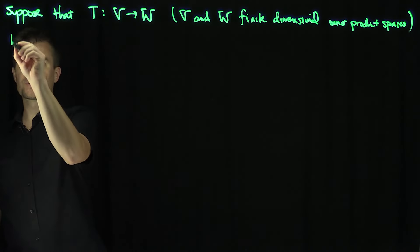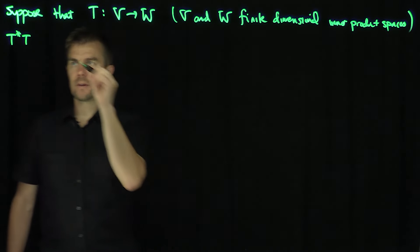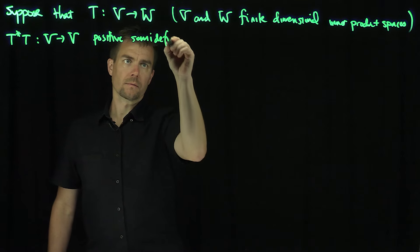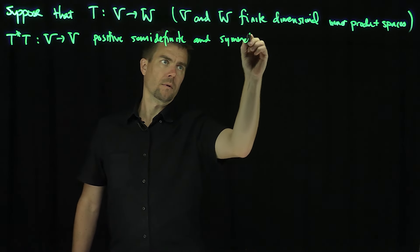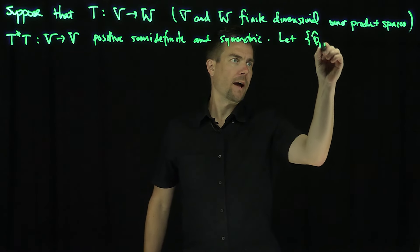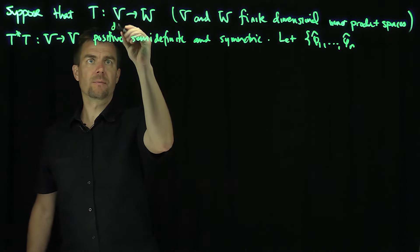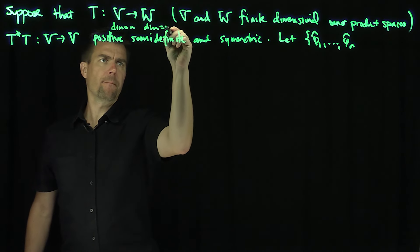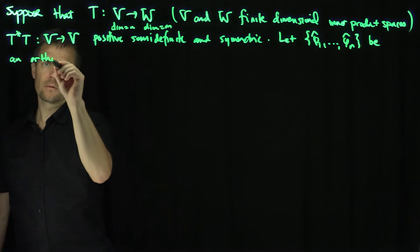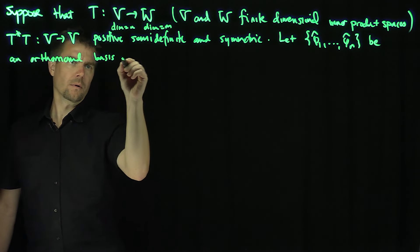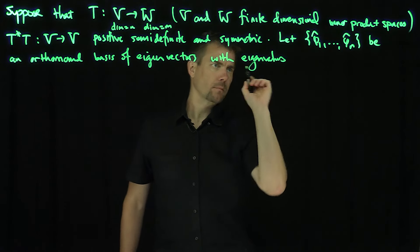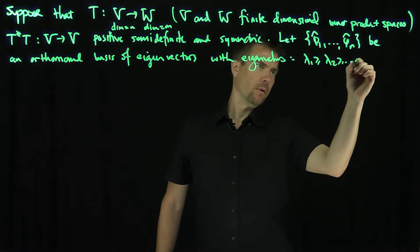We have the singular value decomposition. We consider T*T, the map from V into V, which is positive semi-definite and symmetric. That means I can find an orthonormal basis of eigenvectors for this operator — let's call them phi-1-hat through phi-n-hat — where the dimension of V is n and the dimension of W is m. Let phi-1 through phi-m be an orthonormal basis of eigenvectors with eigenvalues traditionally arranged as lambda-1 ≥ lambda-2 ≥ ... ≥ lambda-n.